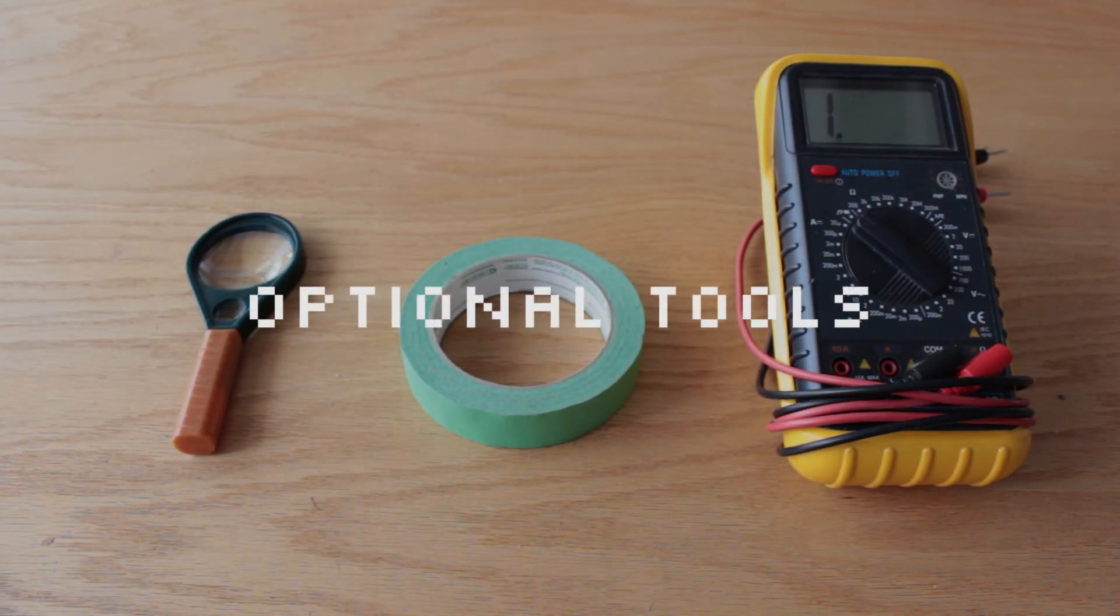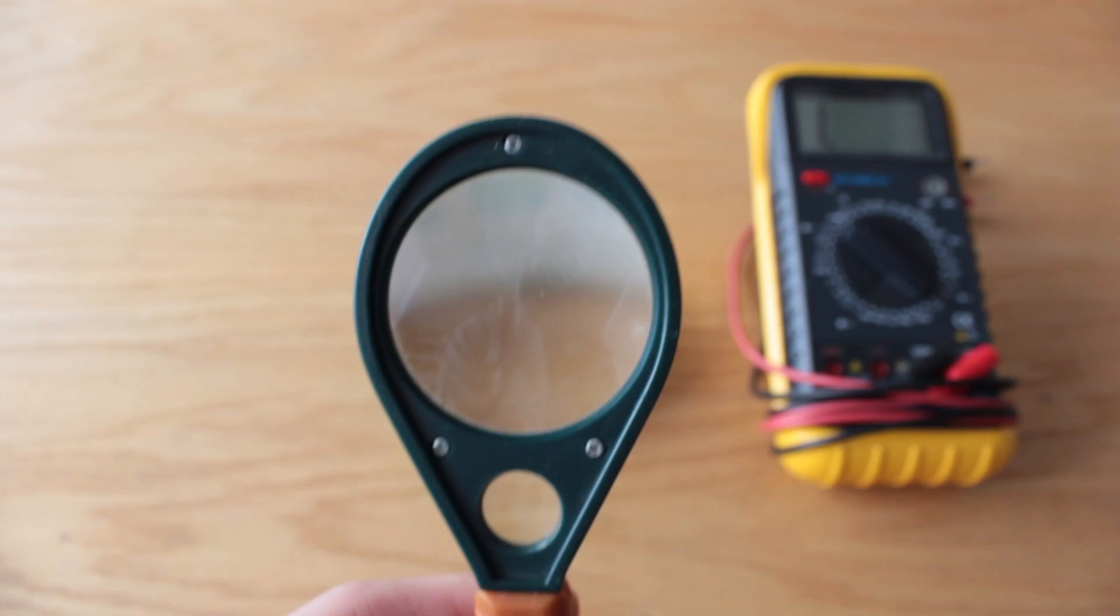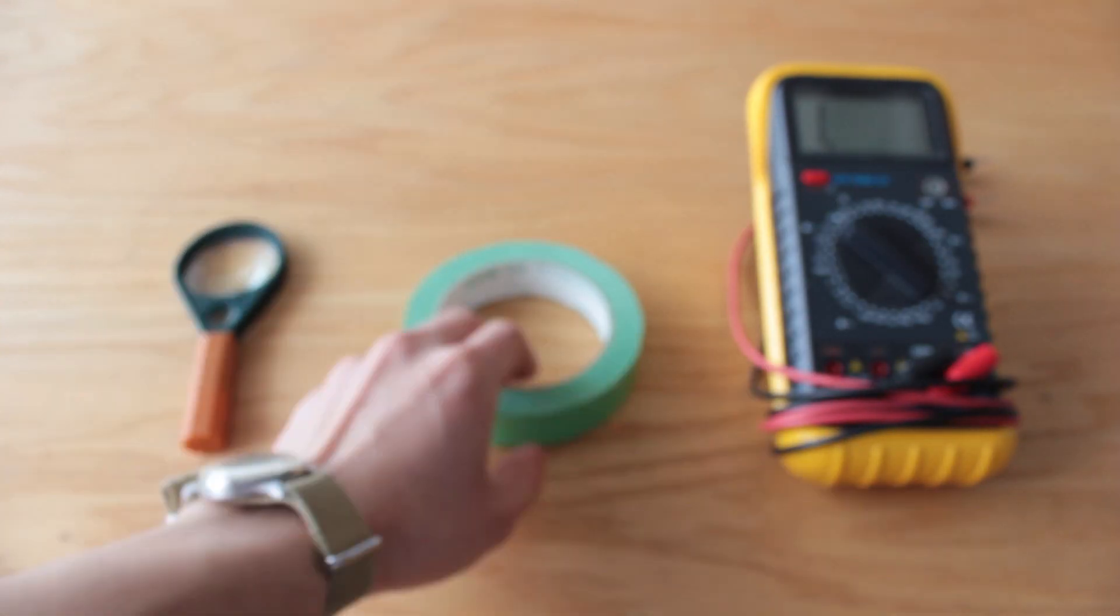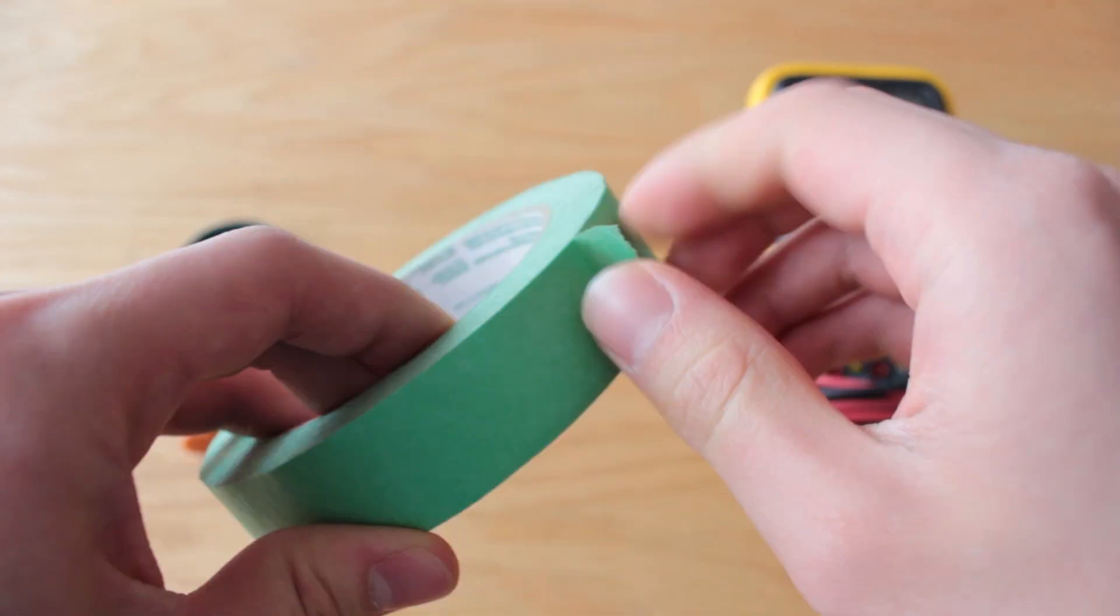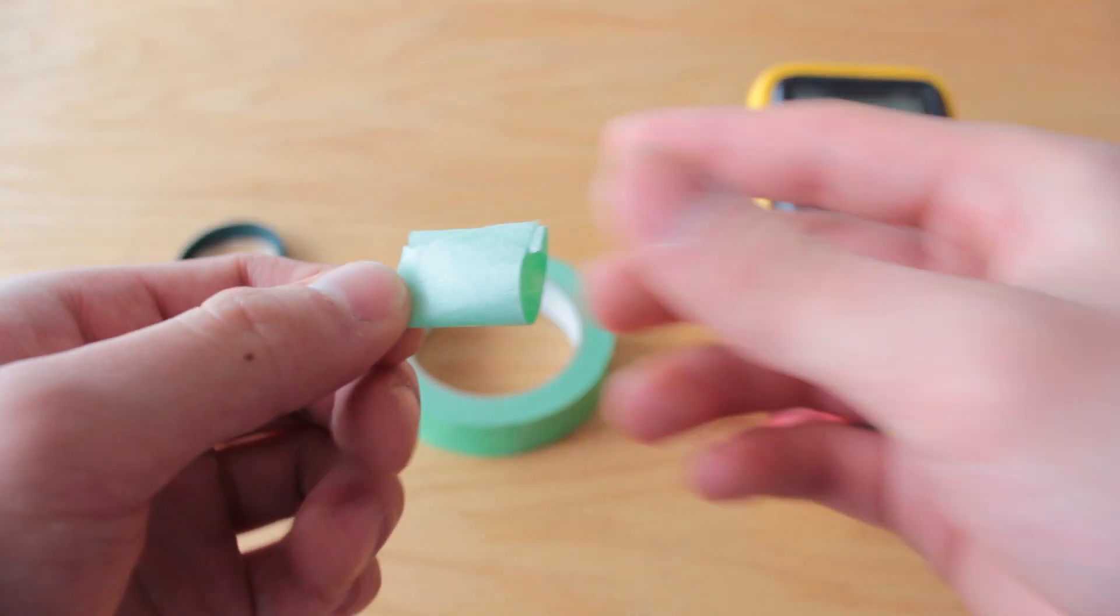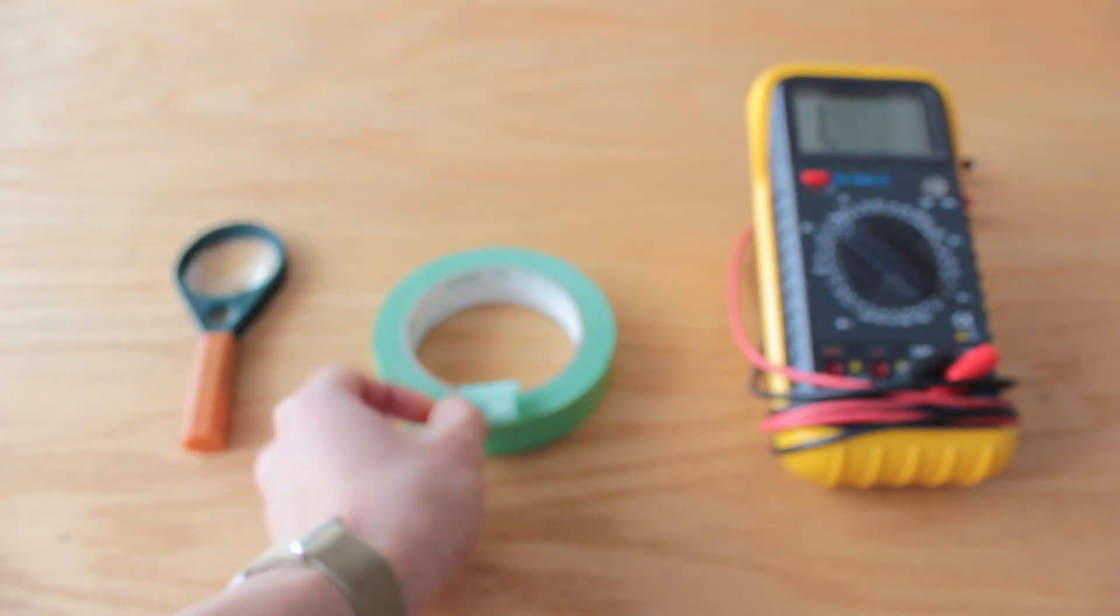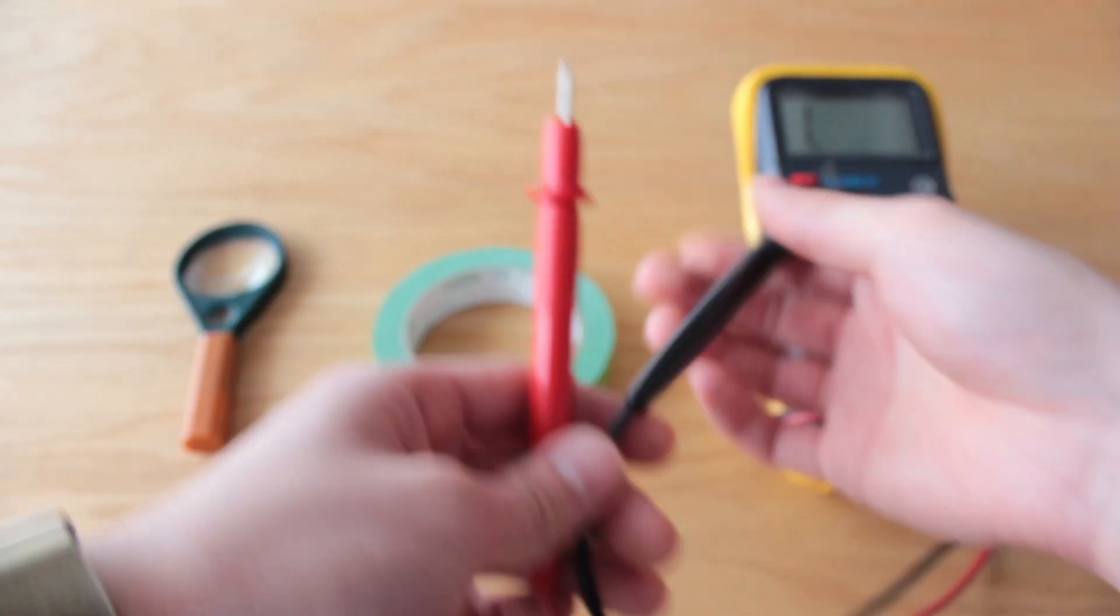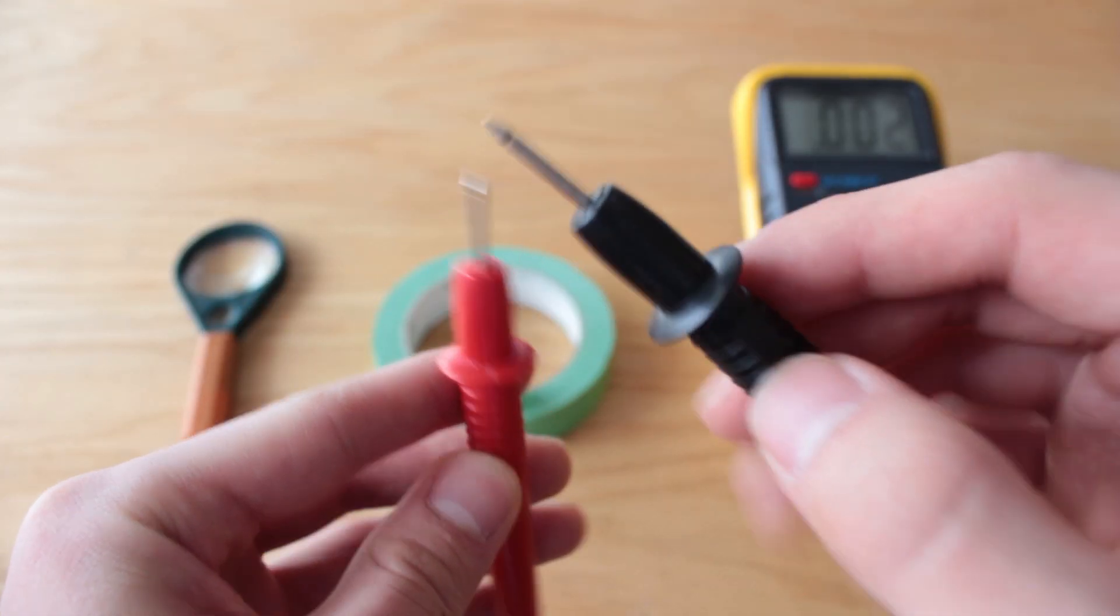And these are some optional tools you might find handy, like a magnifying glass, to inspect that your solder points are solid and clean. Some removable tape can hold down parts while you're soldering. We like to roll them into these little loops. And a multimeter with a continuity test can alert you if any connections are crossed.